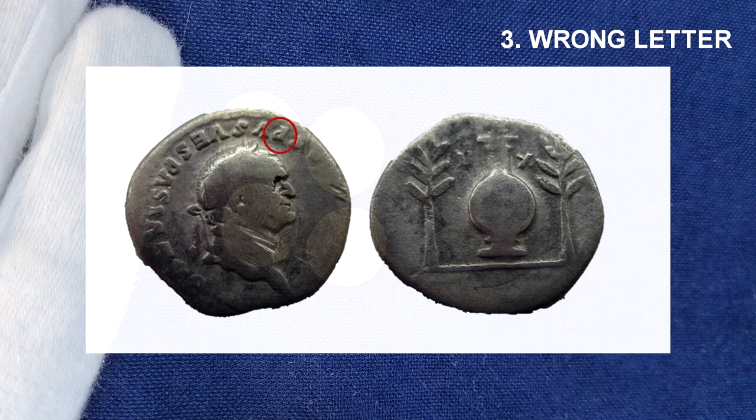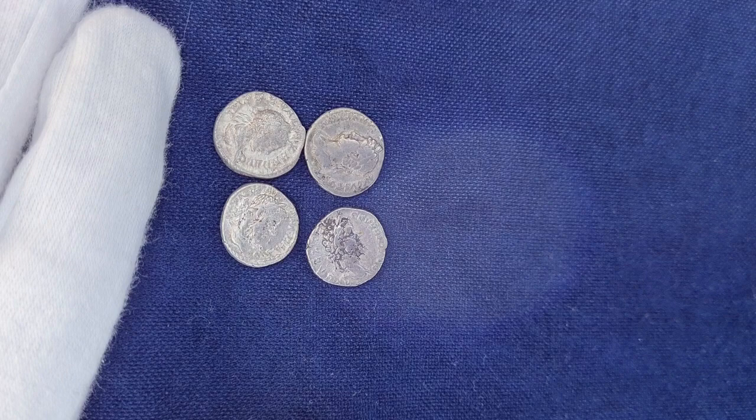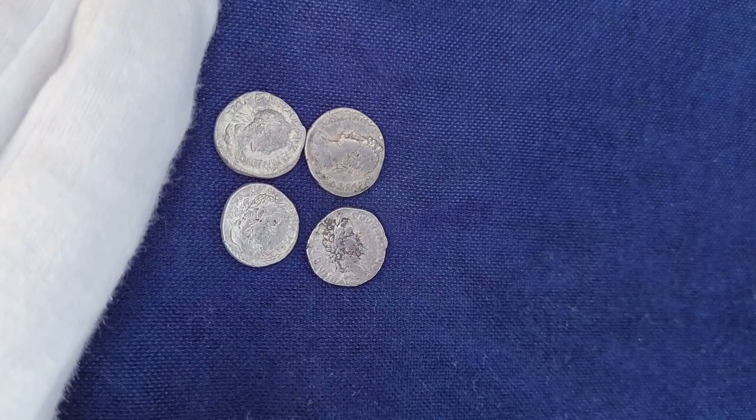The link to David's collection can be found in the description below. I always use David's collection for online identification of rare Flavian types and variants, as there is no other source that can rival his selection of Flavian types and variants.